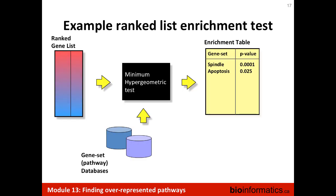In a ranked gene list, instead of splitting your matrix into genes you're interested in and others you're not, each gene will have a value that decreases — the most interesting genes lie at the top. The black box in this case is called the minimum hypergeometric test, and it will again spit out a list of pathways significantly associated to your experimentally derived gene list. You will have to run it across many different pathway sets in order to capture the entire pathway space.